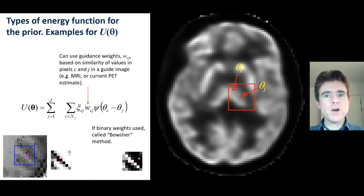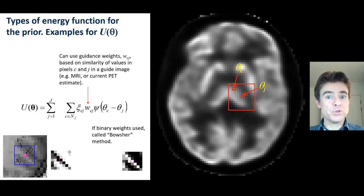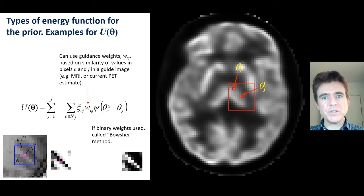A very large value would effectively switch off the edge-preservation, because we'd be allowing smoothing between multiple neighbours. Whereas with a limited number of ones, those ones would only be in particular structural regions, looking for the k-nearest neighbours. The Bauscher method is like a binary version of that weighted smoothing method.